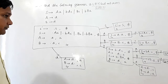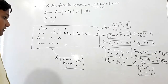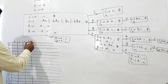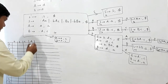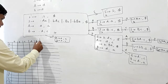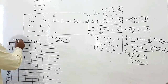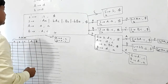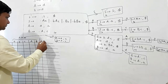Now I have to construct the CLR1 parsing table. The terminals are d, a, c, and dollar for the action part, and the non-terminals are A, C, and B for the goto part.